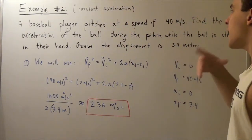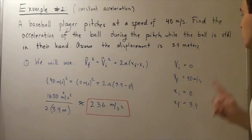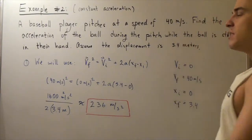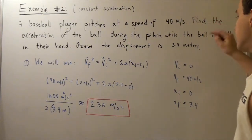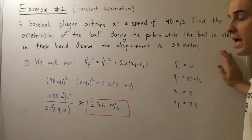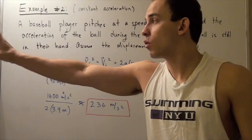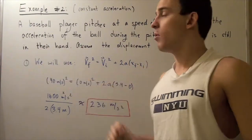Let's look at the variables that we know. We know our initial velocity, which is at the point the person begins the pitch, is 0 meters per second. Our final velocity, the velocity before the person releases the ball,